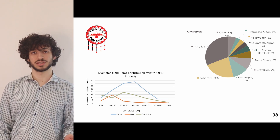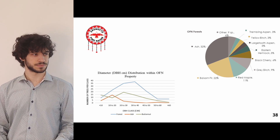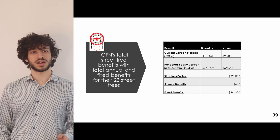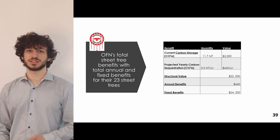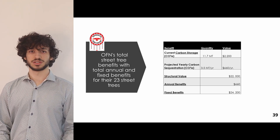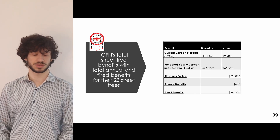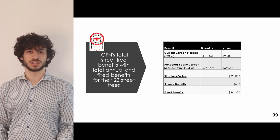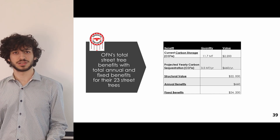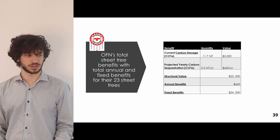For the street trees, fixed benefits include carbon storage at approximately $2,200 and structural value at $22,000, totaling about $24,200. Annual benefits include carbon sequestration at approximately $660 annually.